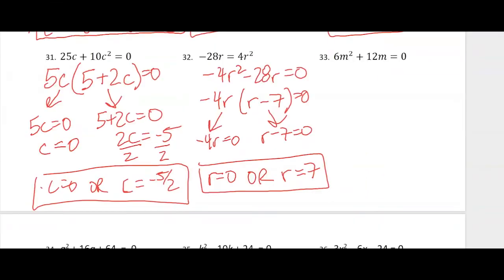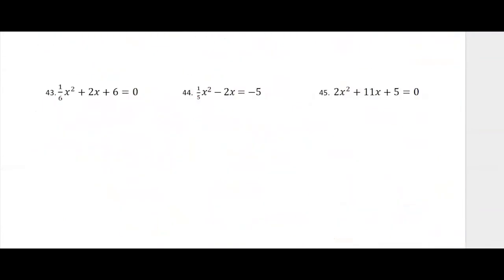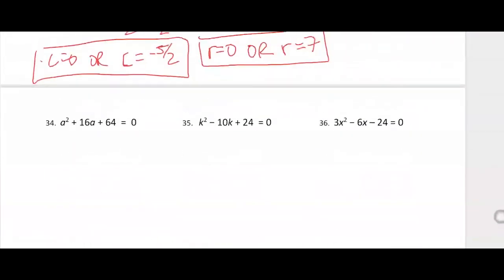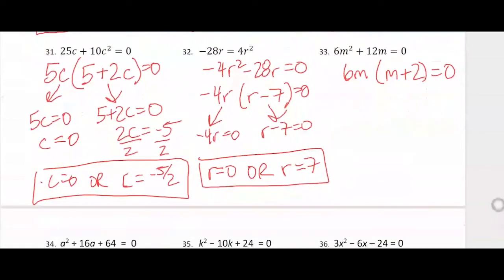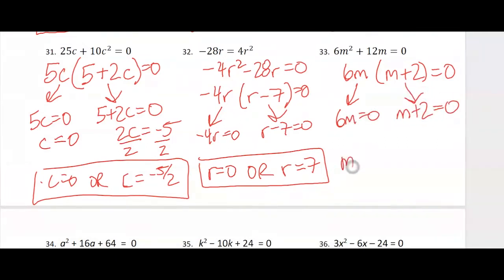Number 33 — our GCF here is going to be 6m, so we get 6m times (m plus 2). Set each equal to 0: either m equals 0 or m equals negative 2.